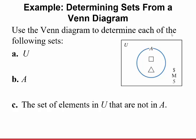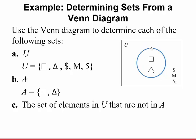I'll use this Venn diagram to determine each of the following sets. I have the universal set — the rectangle — and everything inside it: a square, triangle, dollar sign, M, and 5. Set A is this circle, containing just the square and the triangle. The universal set is everything: square, triangle, dollar sign, M, and 5. Set A is just the square and the triangle. The set of elements in U that are not in A — those outside A — is just the dollar sign, M, and 5.